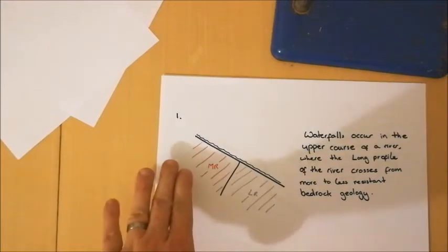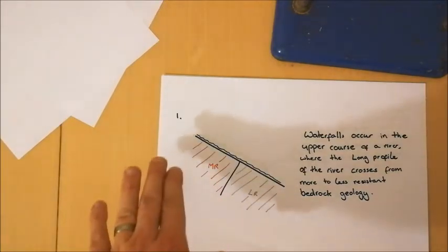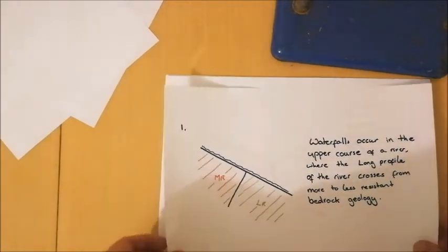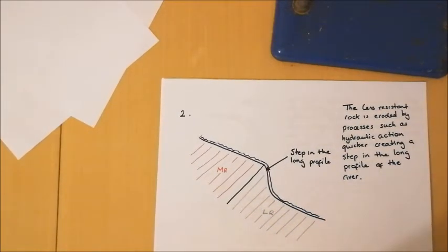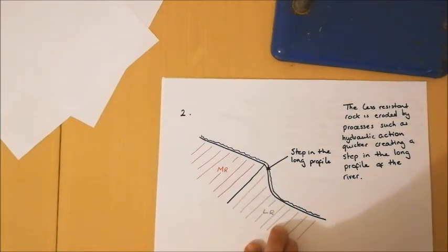In the first case, waterfalls are associated with erosion in the upper course of a river. They occur where the long profile of the river crosses from more to less resistant rock. That may be, for example, a very resistant rock such as granite and then passing on to an area of less resistant rock like sandstone. What we're then going to get as a result is that the less resistant rock is going to be eroded more quickly, particularly by processes such as hydraulic action and abrasion. It's going to create a step in the long profile of the river. That less resistant rock has been eroded at a much quicker rate than the more resistant rock before it.